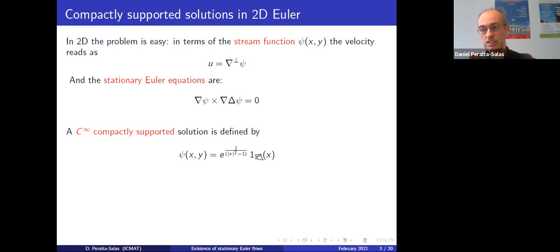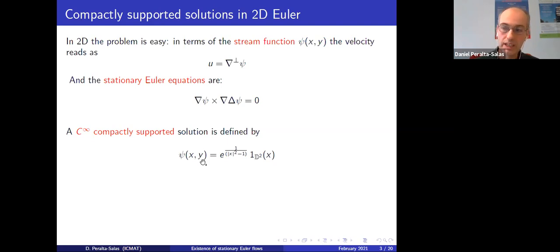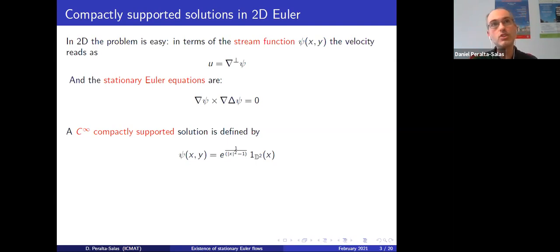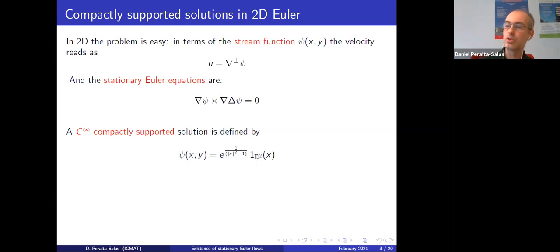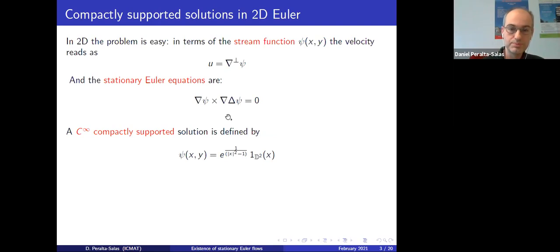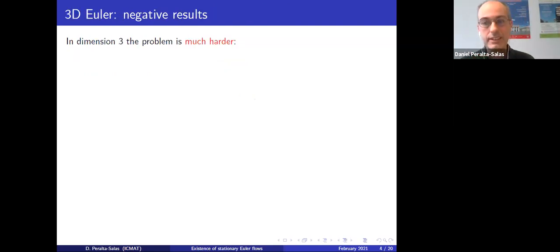You can glue several of these solutions: take disjoint discs with different centers and sum functions of this type to get solutions whose support is formed by several disjoint discs. It remains an interesting open question whether every connected component of the support must be radially symmetric, or whether one could have smooth compactly supported solutions whose support is an ellipse or similar non-circular shape. But at least existence is very simple in dimension two.